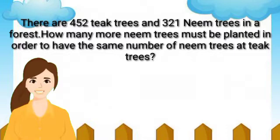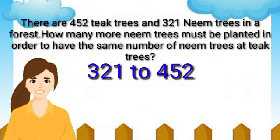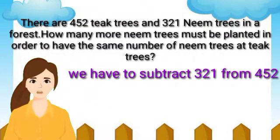We have to do subtraction. In order to find the answer, we have to count ahead from 321 to 452. In other words, we have to subtract 321 from 452.